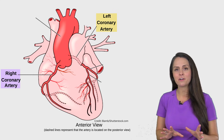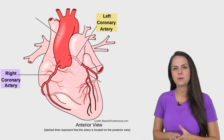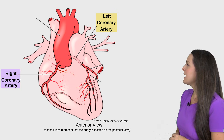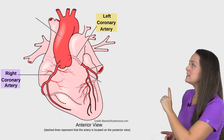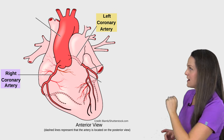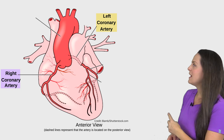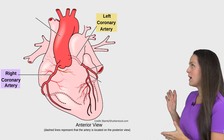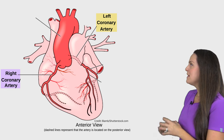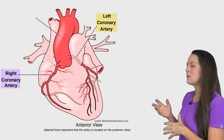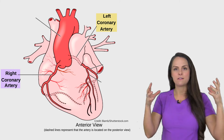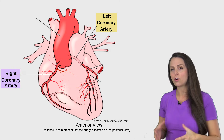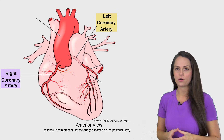Now there are two main coronary arteries you want to remember. We have the right coronary artery, and from your view on the screen, it's on the left side. And then we have the left coronary artery, which is on your right side. These coronary arteries go to the right and left side of the heart, and they branch off into smaller arteries to supply that myocardium.